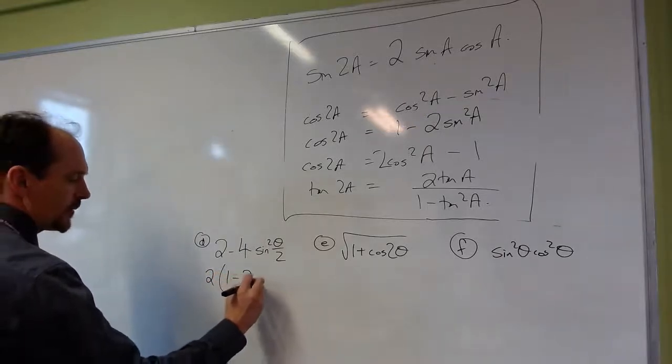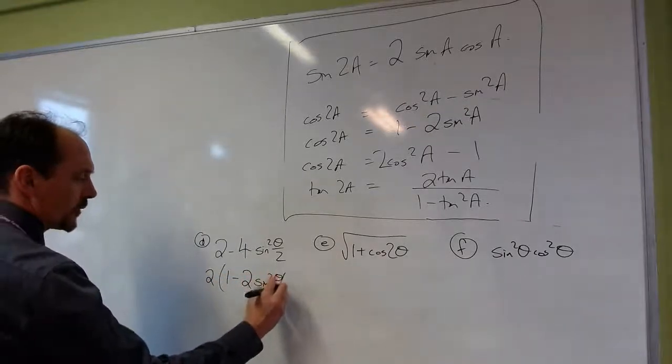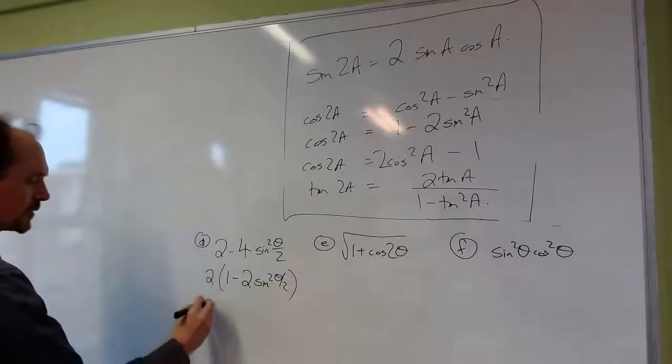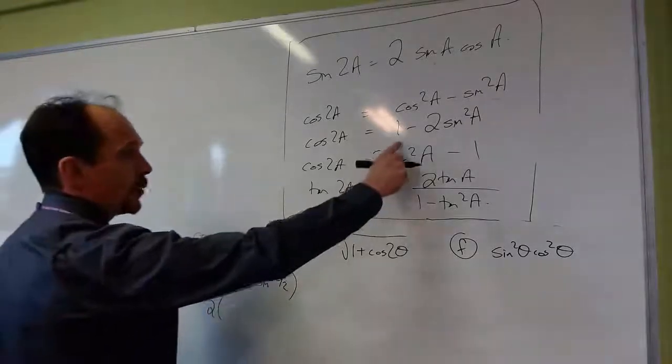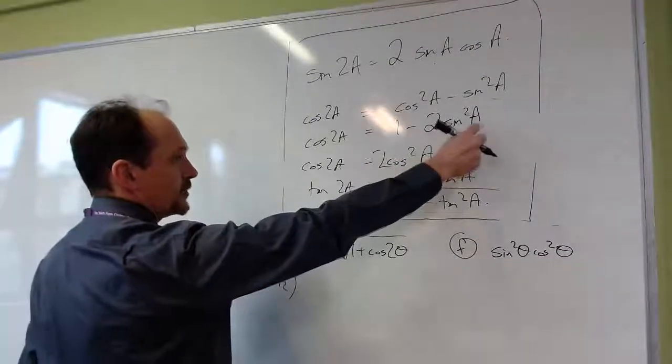You can see I've got 1 minus 2 sine squared theta over 2. And 1 minus sine squared, I've got here, 1 minus 2 sine squared theta over 2.